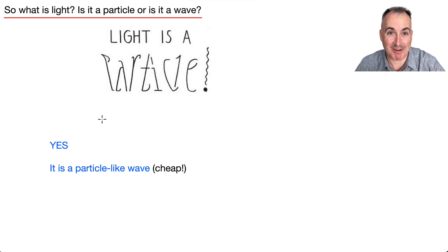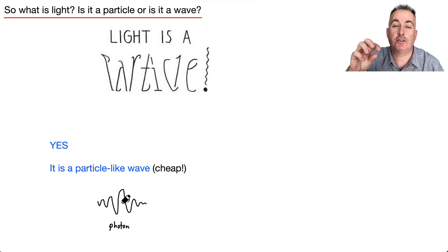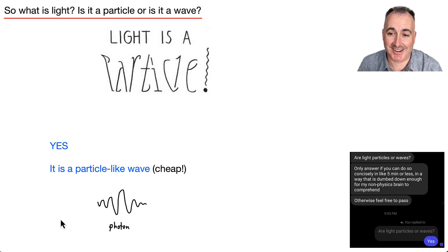It's a particle-like wave. In fact, we've invented something. We actually call it a photon. So this is this idea that, you know, you can have some sort of, I'm just trying to draw something like this right here. So this here is what we call a photon. And the way I've drawn it is kind of cheap because if you zoom in, it's a wave. But if you zoomed way out, it's kind of like a particle. And that's why I put this here. Are light particles or are there waves? Only answer if you can do so concisely in like five minutes or less in a way that's dumbed down. Otherwise, feel free to pass. It's like, are light particles or waves? Yes.